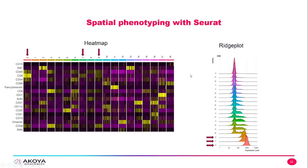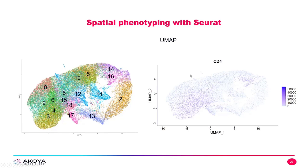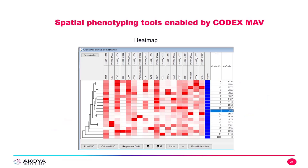We can also leverage the UMAP to see what these phenotypes might be. If we can't determine from the heat map and ridge plot alone, we can look to the UMAP to see our different populations. In this case, we have CD4 expressed on the left-hand side of the UMAP, so we would expect clusters 3 and 4 to be CD4 populations. Inside of CODEX MAV, we also have another heat map with a dendrogram on the left-hand side, where bright red is high intensity and white is low intensity for each target marker per cluster.